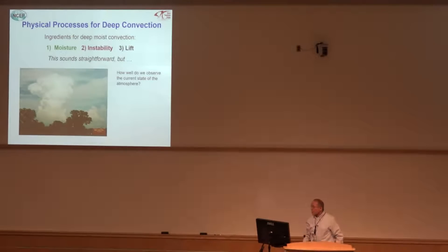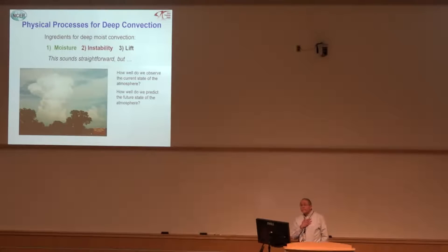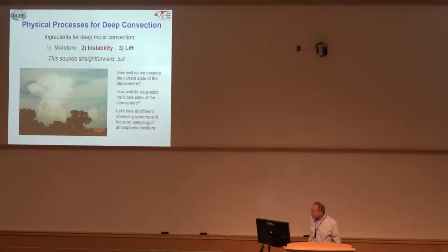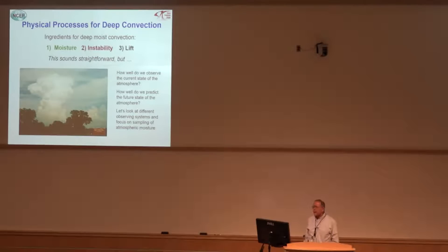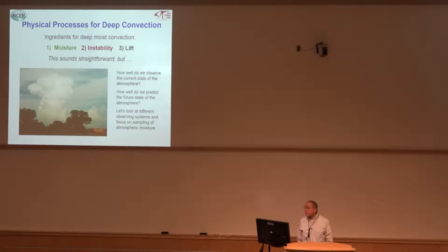So how well do we observe the current state of the atmosphere? How well do we predict it? Let's look at some different observing systems and focus on how well we sample moisture, because it is one of the key ingredients in deep moist convection — are we going to get thunderstorms?